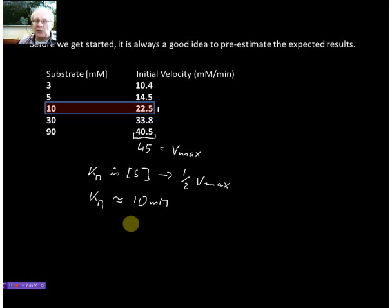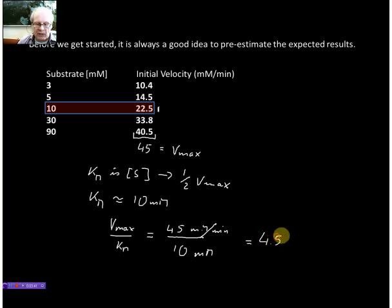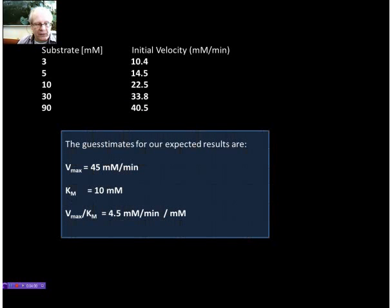And we can very easily calculate from this data our Vmax over Km. This is the enzyme parameter that tells us how the enzyme behaves at very low substrate concentration. So we've got 45 millimolar per minute divided by 10 millimolar, and from that we would get 4.5 per minute. So these are our guesstimates: 45 millimolar per minute for the Vmax, 10 millimolar for the Km, and 4.5 per minute for the Vmax over Km.